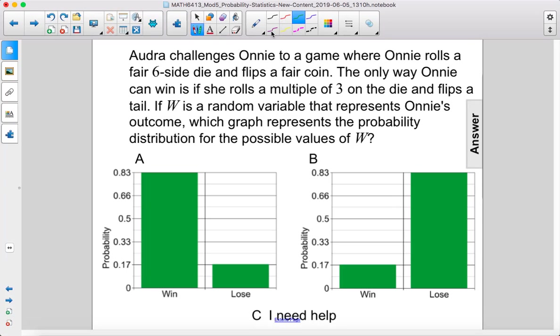Audra challenges Ani to a game where Ani rolls a fair six-sided die and flips a fair coin. The only way Ani can win is if she rolls a multiple of three on the die and flips a tail.